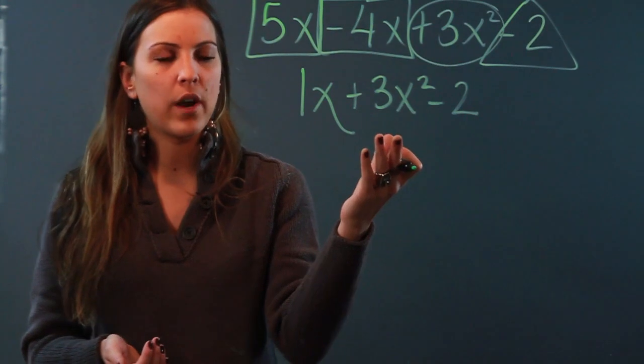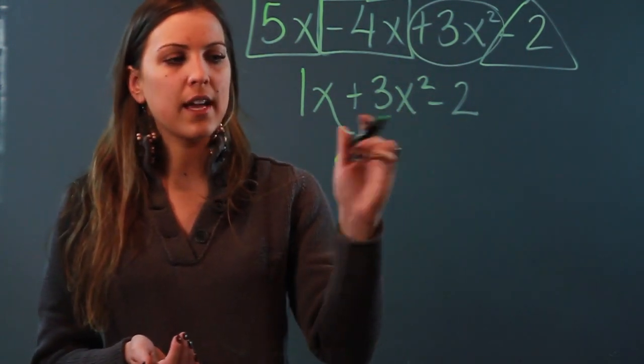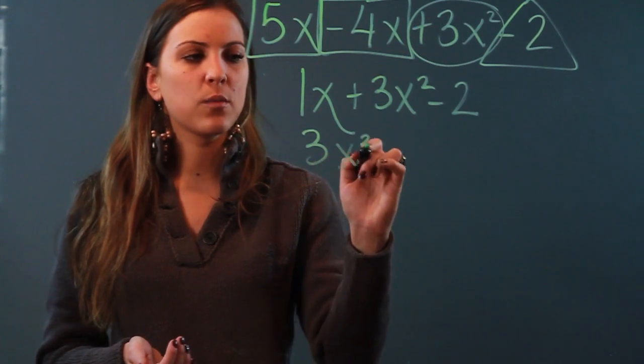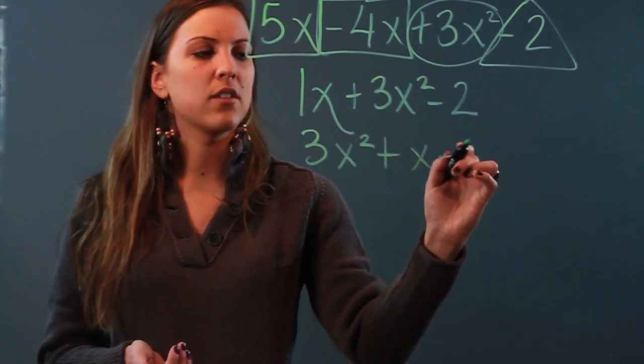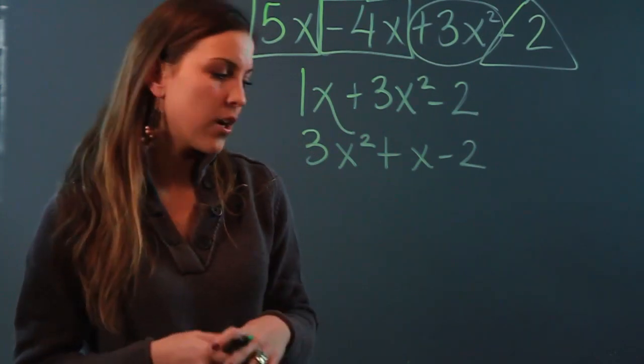If I wanted to simplify this a little more, I could because we like to write polynomials in descending order. So I'm going to write the highest exponent first: 3x² + x - 2. x and 1x are the same thing, right? That one can be imaginary. So that's how you add or subtract.